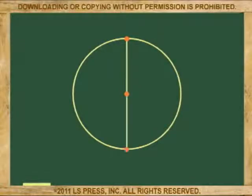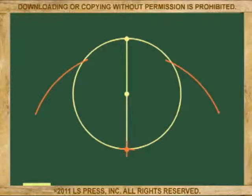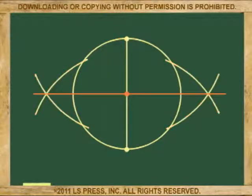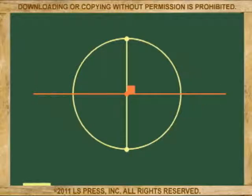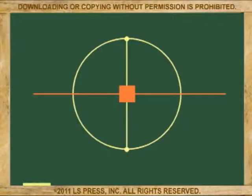We then extend the radius to make it a diameter. Once one diameter is in place, we construct the perpendicular bisector of the vertical diameter. This new diameter, because it is the perpendicular bisector, forms four right angles at the center of the circle.